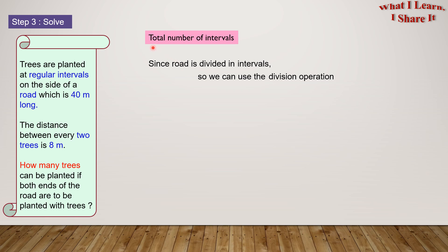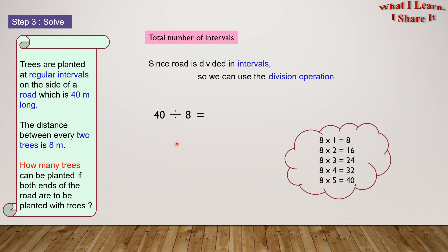Step 3: Solve. For the total number of intervals — since the road is divided into intervals, we can use the division operation. So here is 40, which is the length of the road, divided by 8, which is the distance between every two trees. Using the 8 times table: 8 times 5 is 40, so 40 divided by 8 equals 5. The number of intervals equals 5.